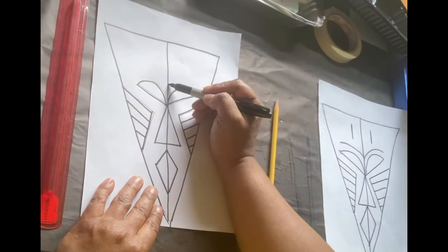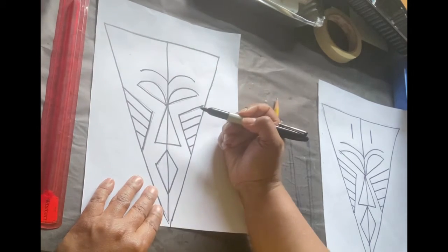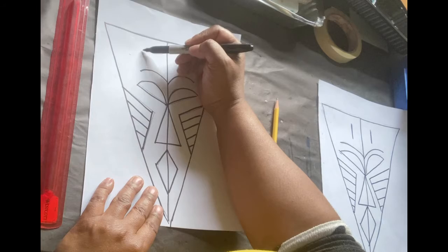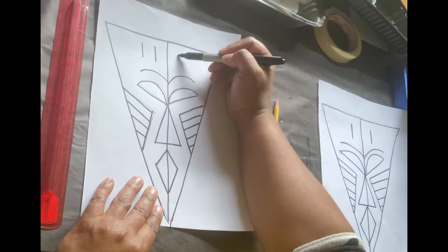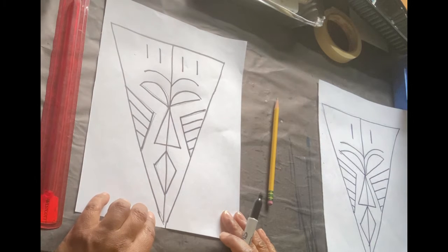We're going to add eyebrows. One, curve line. Two. And we're going to add just some creative vertical lines at the top. So now we have our mask.